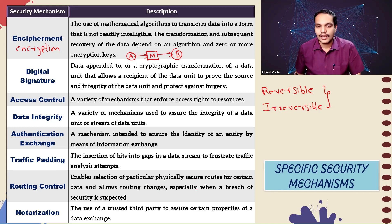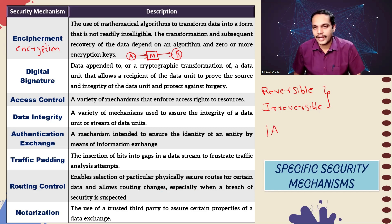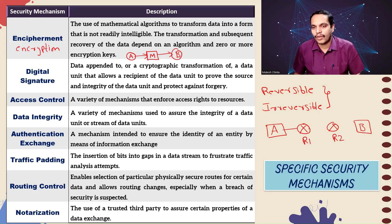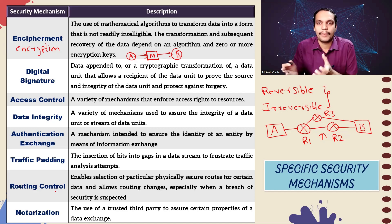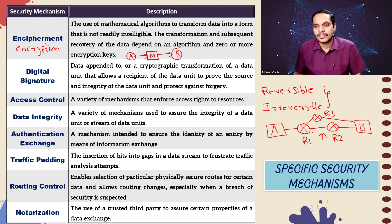Next comes routing control, which enables the selection of particular physically secure routes for certain data and allows routing changes especially when a breach of security is suspected. For example, if a data path from sender A to receiver B goes through routers R1 and R2, this mechanism gives the ability to change the physical route if there is a suspected security breach between R1 and R2 — allowing packets to go through R3 instead, because that path may be prone to attackers.